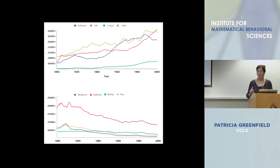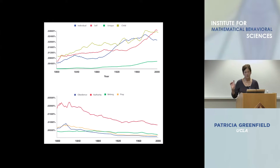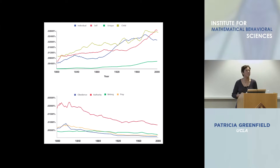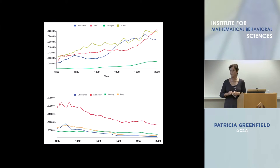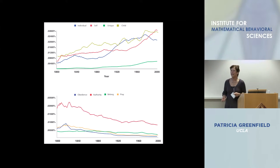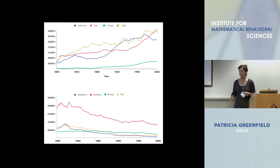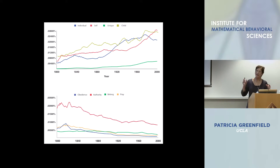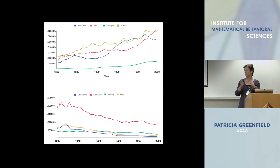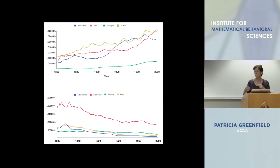There are both strengths and weaknesses. I have a postdoc coming from Japan — there's no Google database in Japanese — so he's planning to use newspapers, because there is a Japanese online database of newspapers that's searchable. That will have the advantage of being more accurate in terms of short-term change and not having that lag between the writing and publication.